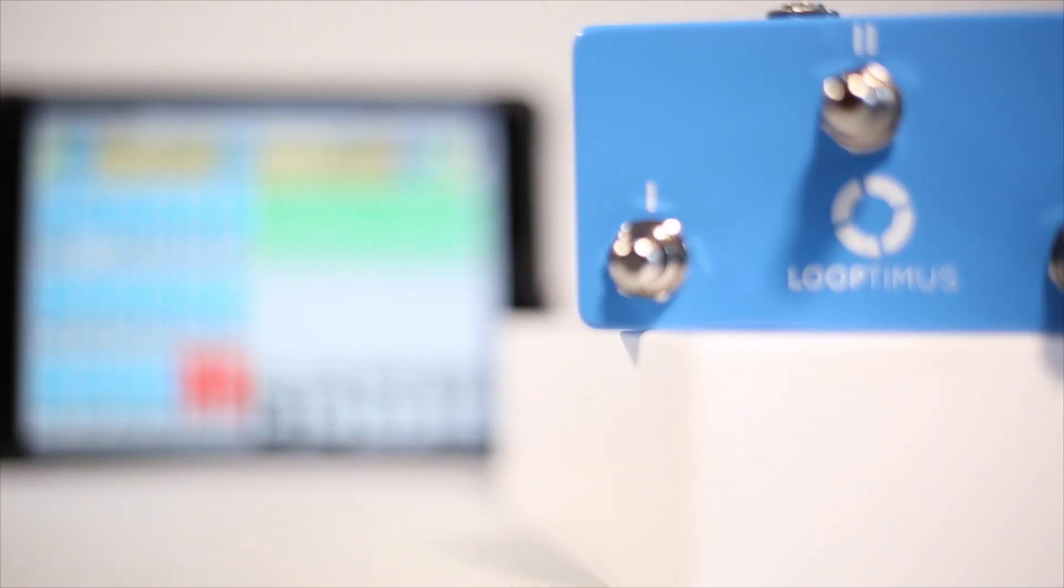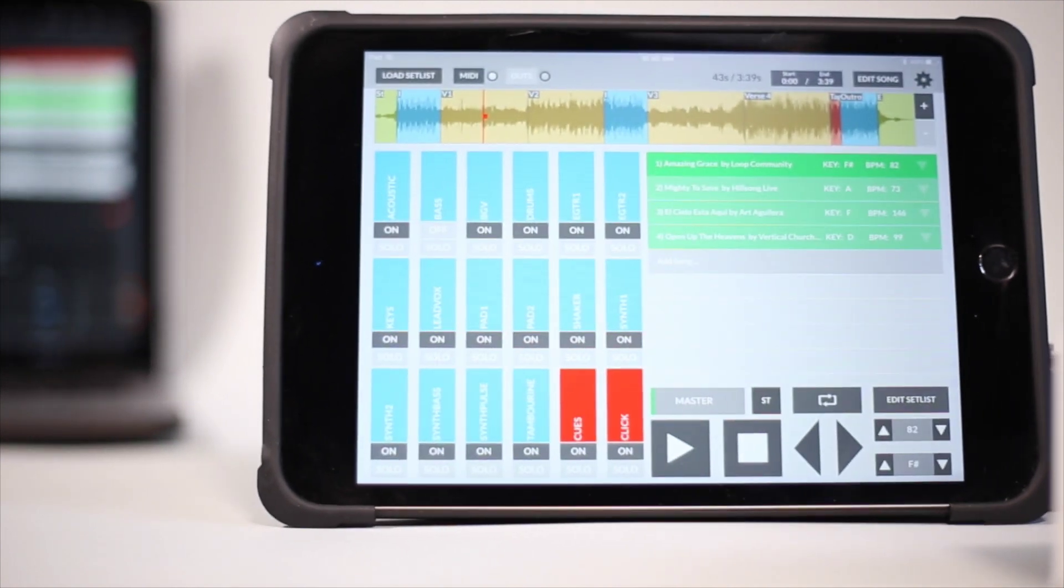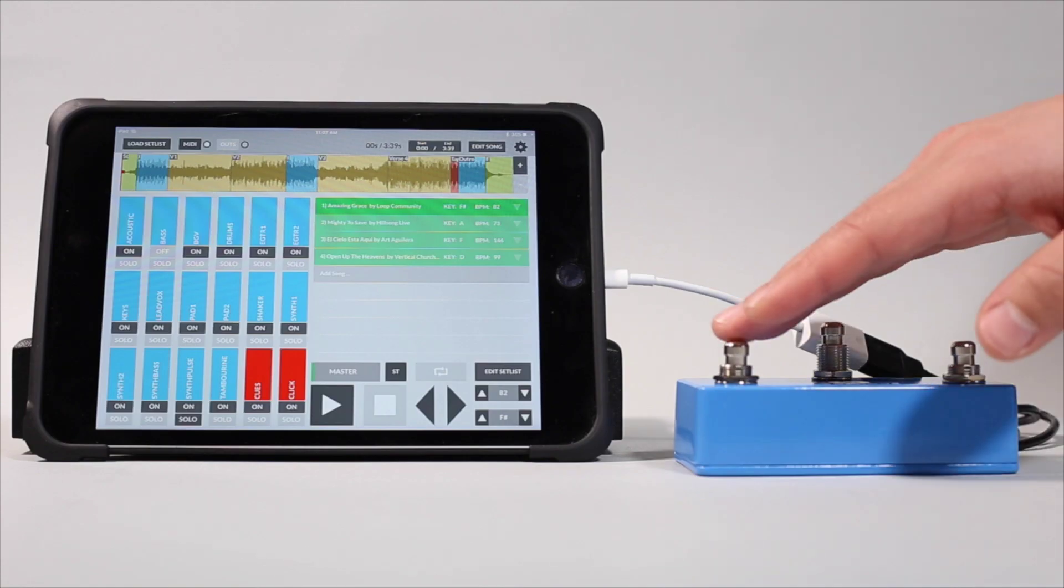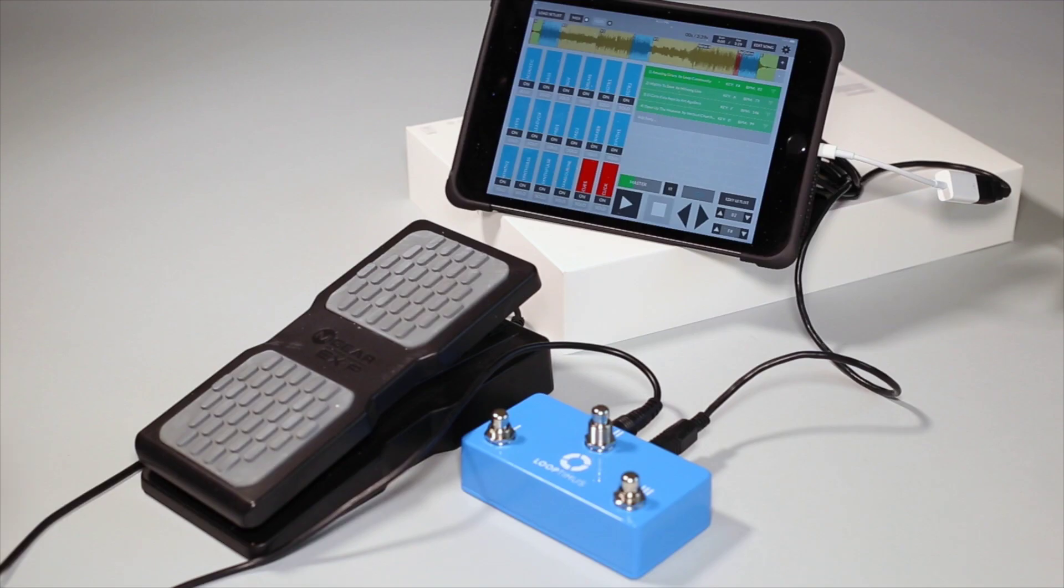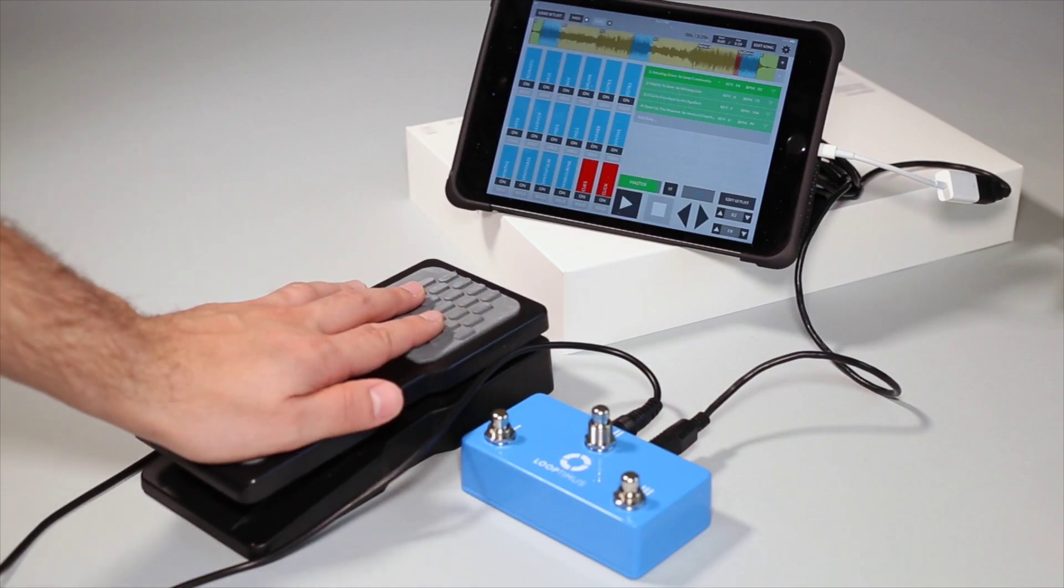Looptimus Mini has three buttons that send MIDI notes to control your music software. Use Looptimus Mini to start, stop, and advance to the next song. Connect an expression pedal to control volume and other effects.